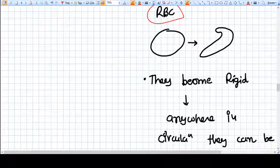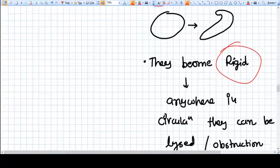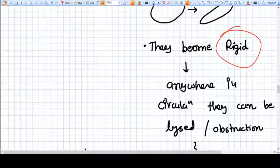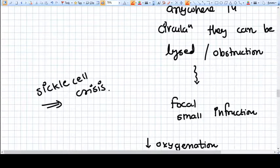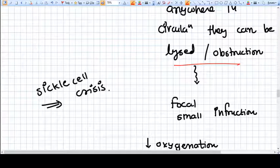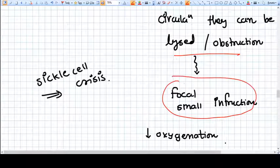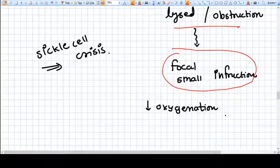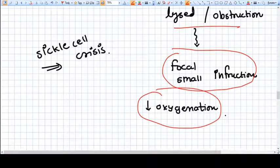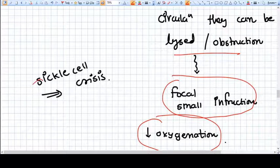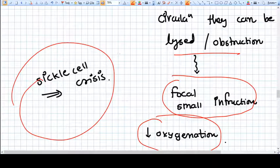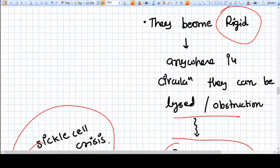And these sickle cells become rigid and they can anywhere block the circulation. They can be lysed, their life span is also very less, and they can cause obstruction. Because of obstruction in the blood vessels, they can generate a focal small infarction of the tissues where the blood vessel is blocked, and that's why decreased oxygenation will be there.